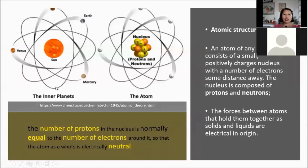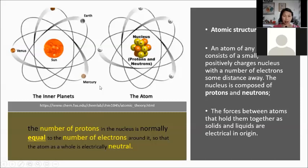Let us review the concept of atom and ion. Atoms are the building blocks of all materials, no matter how simple or complicated. From chemistry, an atom consists of three sub-atomic particles: the electron, which is negatively charged; the proton, which is positively charged; and the neutron, which has zero charge.